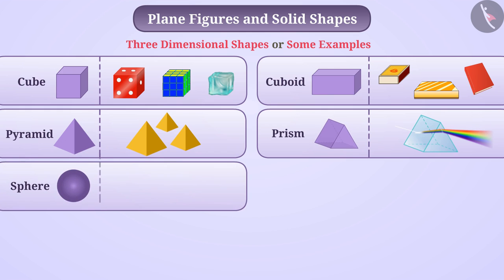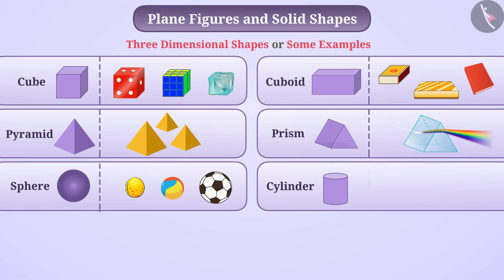This is a sphere. This is a cylinder. You must have seen this shape in the shapes of pen, bottle, cell battery, etc.